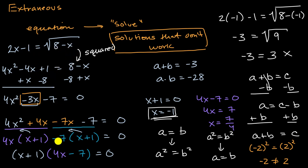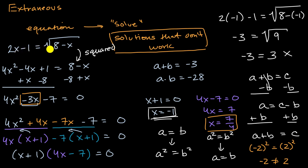So x equals negative one being extraneous makes sense — we can't always reverse all the way back to confirm that 2x minus one equals the square root of eight minus x. The two obvious places in algebra where this matters: first, when dealing with radical equations, because you're doing that squaring step, and squaring is not reversible.